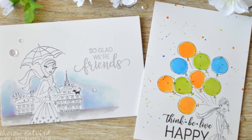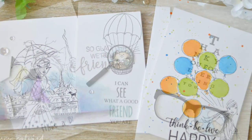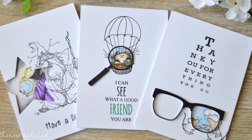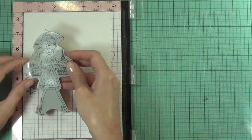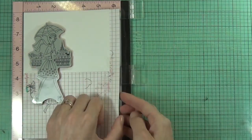Hi it's Therese and I'm here for Penny Black and it's time to give me five. Today the technique that I'm going to be playing with is actually spotlight coloring and I've got five different ways to do this.